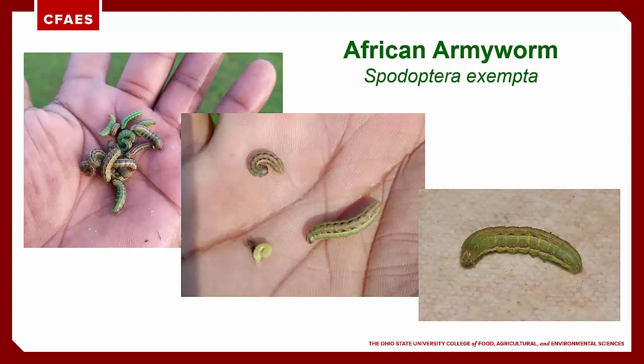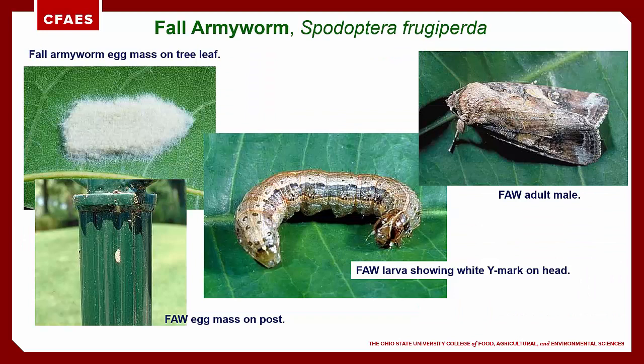During cooler weather African armyworms may be dark brown, but green and light brown are more common colors seen in warmer weather. The fall armyworm is usually brown to nearly black in color with distinctive stripes down the body, and you can see the inverted Y-shaped mark on the head. Spodoptera adults are medium-sized moths with mottled patches of brown, white and black scales, and each species can be identified by the patterns formed by these color patches.